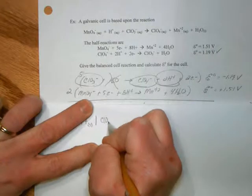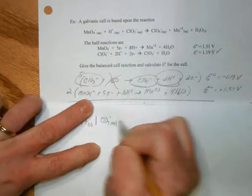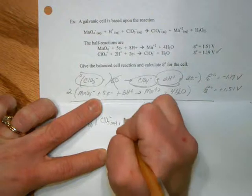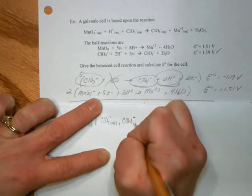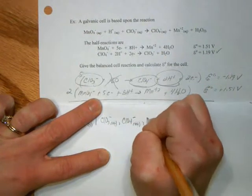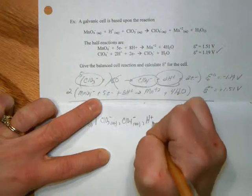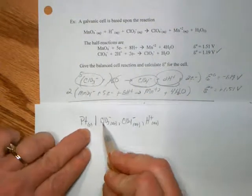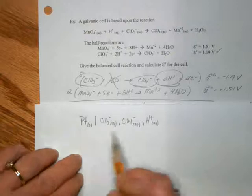We then have chlorate. Now it's also coinciding, but they're in the same phase, with perchlorate, comma, hydrogen ion. Now notice coefficients don't show up. We're just identifying our species. This is our anode.